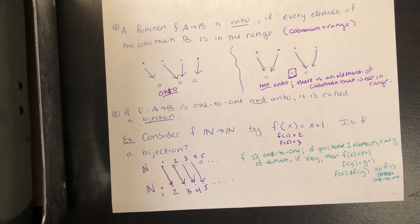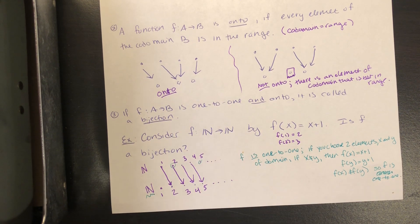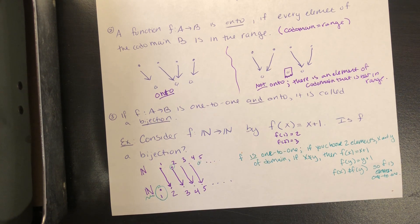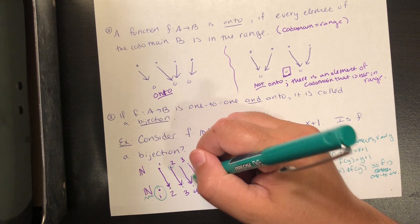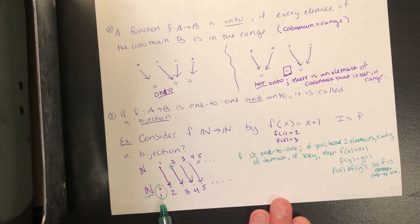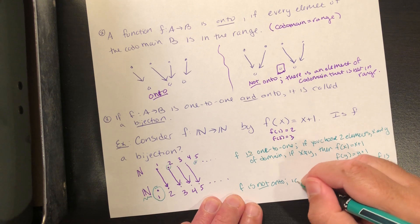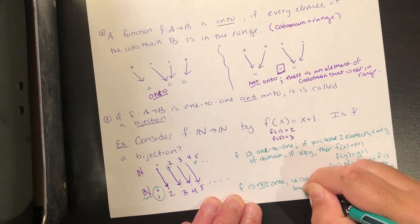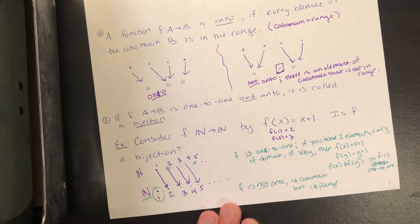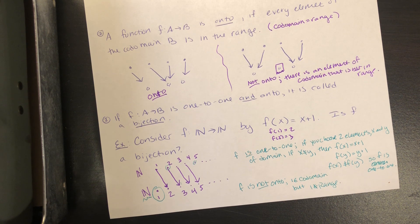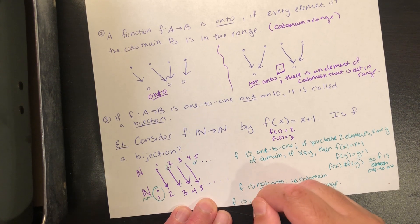One-to-one means different elements in the domain map to different elements of the co-domain. That's not the same as onto — onto means every element of the co-domain, every element of N, gets mapped to by something. That's almost true, except: what's going to map to the number 1? One maps to 2, 2 maps to 3, and so on — everything shifts up by one, so nothing actually gets mapped to 1. There is this first number in the co-domain that nothing maps to, so F is not onto. One is an element of the co-domain but not an element of the range, so the co-domain is not equal to the range. To be a bijection you have to be one-to-one and onto; since F is not onto, F is not a bijection. We'll see more examples in the exercises.